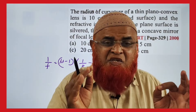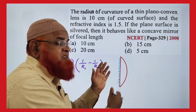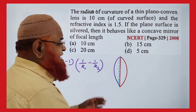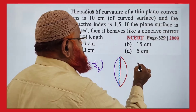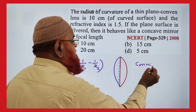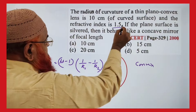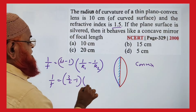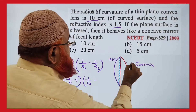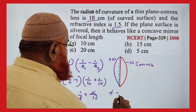For a plano-convex lens with the plane surface silvered, it behaves like a convex lens. Using the lens maker's formula: 1/f = (n−1)(1/R1 − 1/R2) = (1.5−1)(1/10 + 1/10) = 0.5 × 2/10. The 2s cancel, giving f = 10 centimeters.